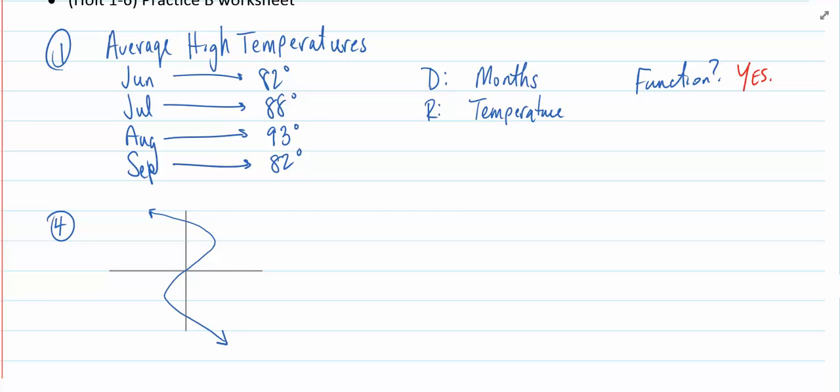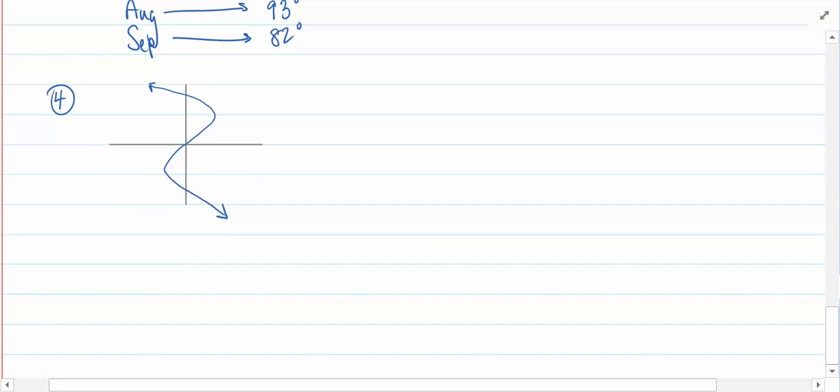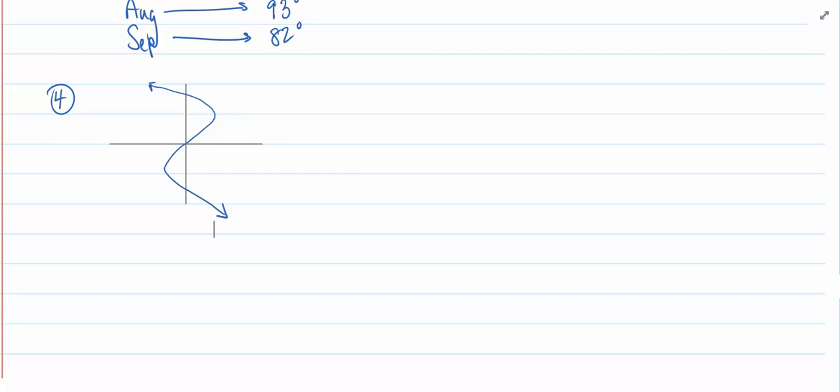Number four is the next question I'd like to take a look at. The question here becomes, use the vertical line test to determine whether each relation is a function. If not, identify two points a vertical line would pass through. Now, if we're looking at this, this particular function or this graph would pass the vertical line test if we drew our vertical line out here on the left-hand side. This vertical line crosses through the graph only one time.